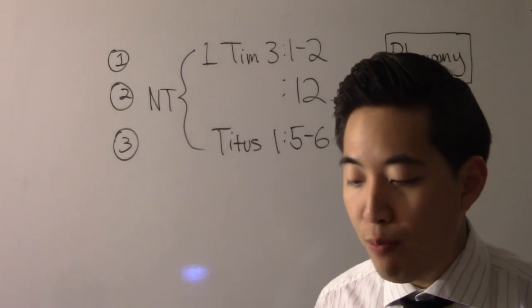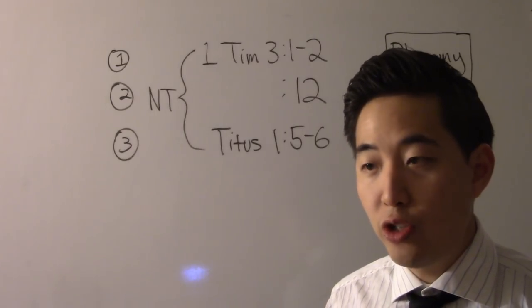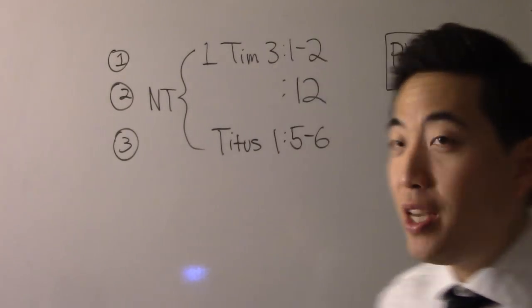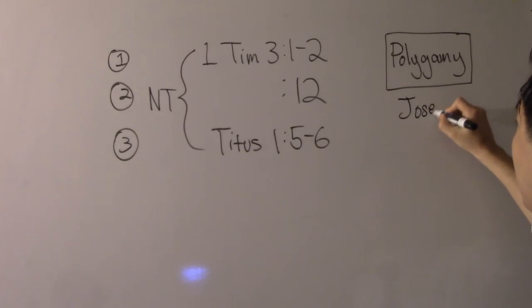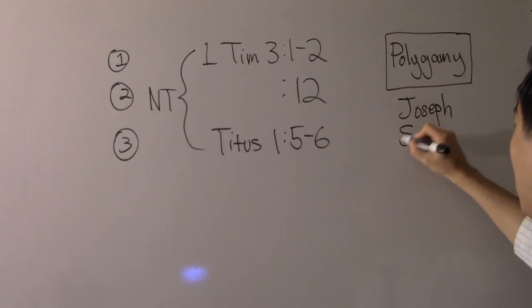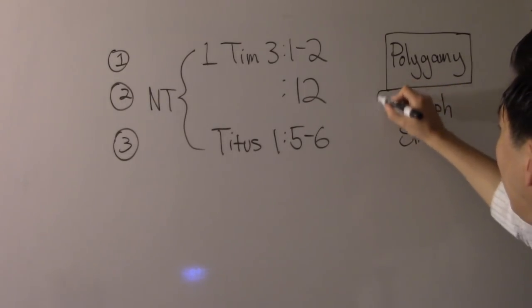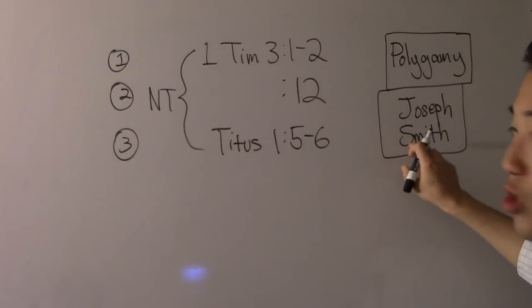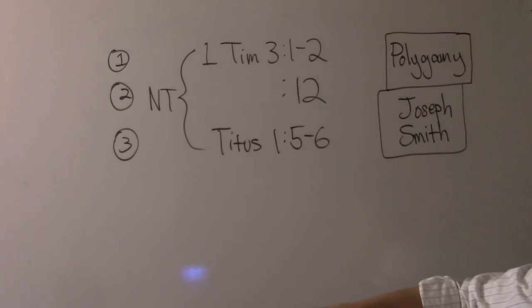Now if there's a Mormon that says, well this is just talking about pastors, church leaders, well that just makes it worse, because Joseph Smith then violated that. Isn't Joseph Smith supposed to be your prophet, your pastor, your church leader, the biggest king, the biggest church leader? And he violated a simple rule for church leaders?